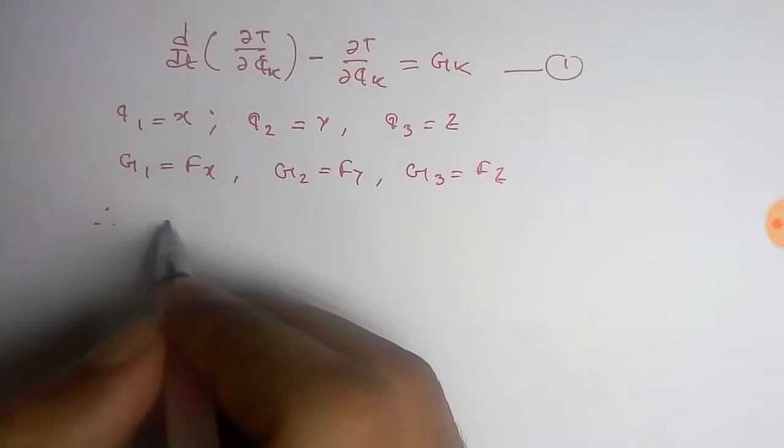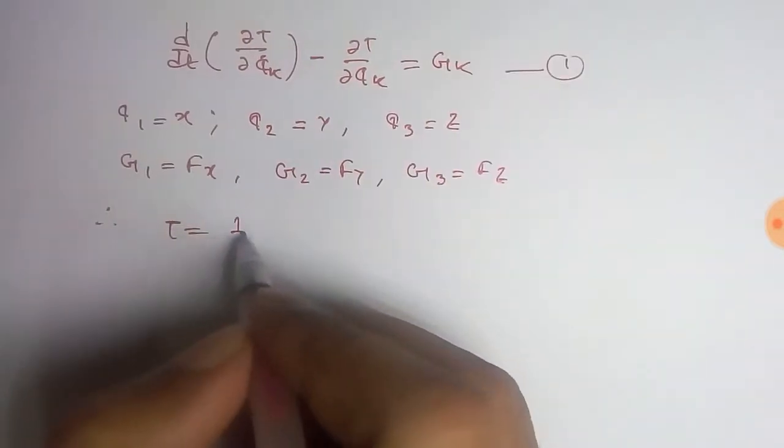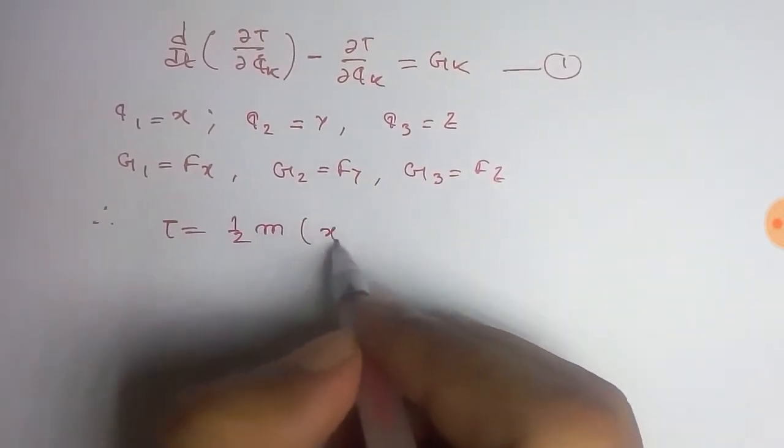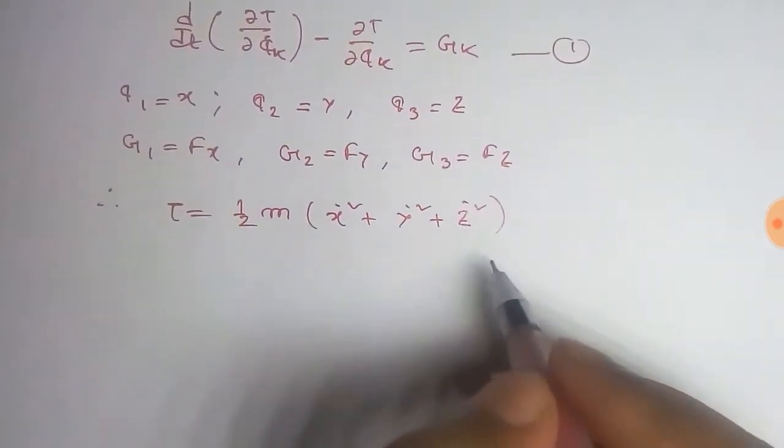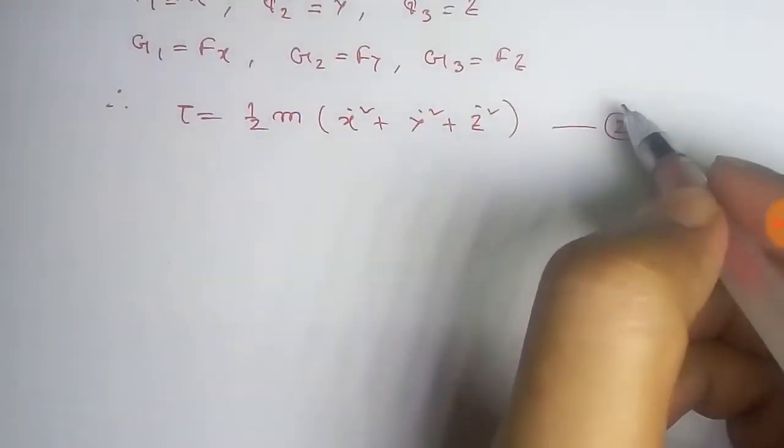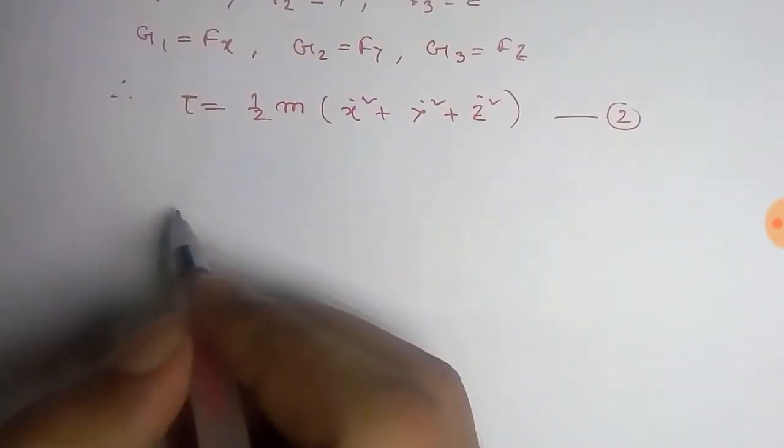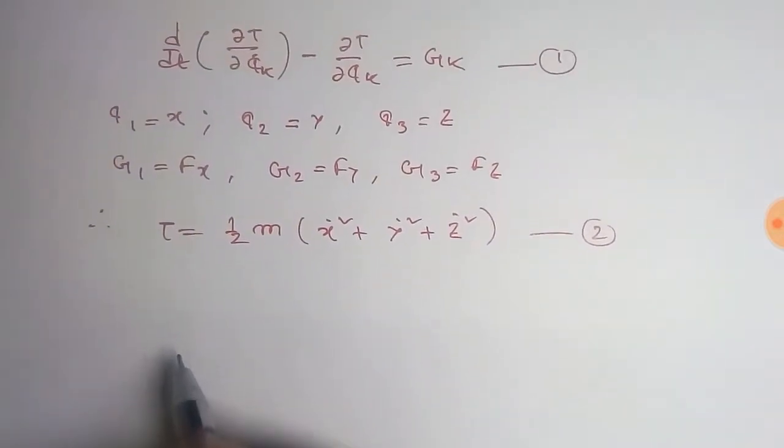Now the kinetic energy T is given by half of m times (ẋ² + ẏ² + ż²), and we take this as equation number two. Now for the x coordinate, equation one takes the form, so from equation one we get only for x coordinate: